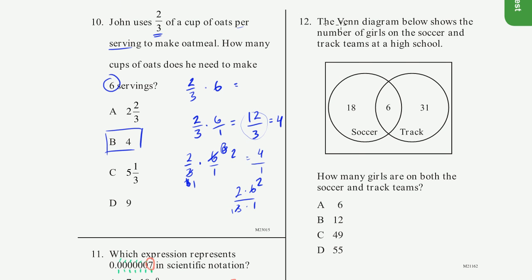The Venn diagram below shows the number of girls on the soccer and track team at a high school. So this is the soccer team, this is the track team. And right here, this is the girls who are on both the soccer and the track team.